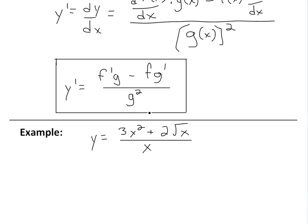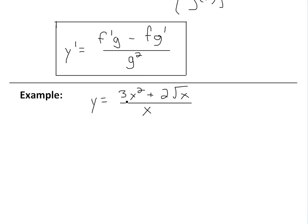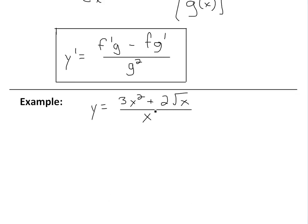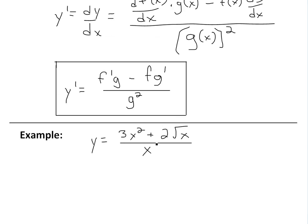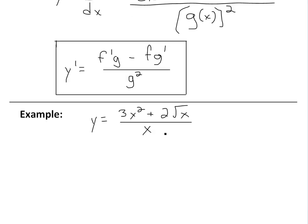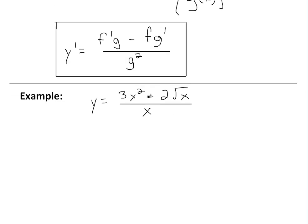Now, this is the example I want to go over. We have y equals 3x squared plus 2 times square root of x, all divided by x. As you can see, you could apply the quotient rule because there's a division here with two functions — top and bottom — but you could simplify it to make it much easier. I'll simplify it first, then I'll do the quotient rule to show you how much harder it is.